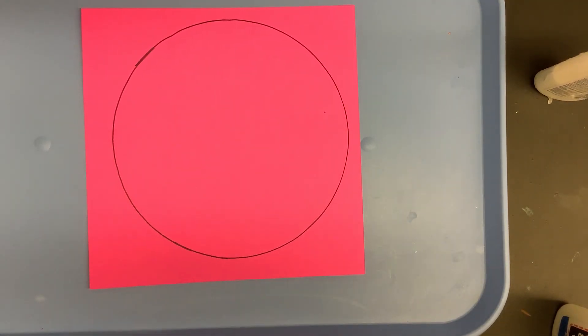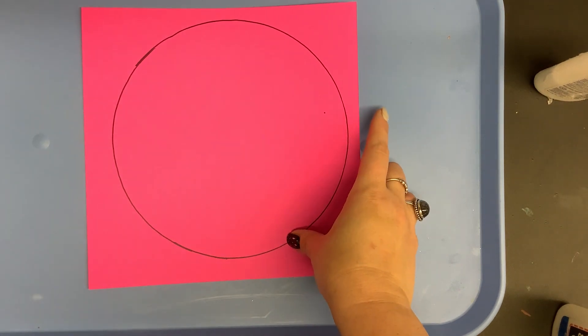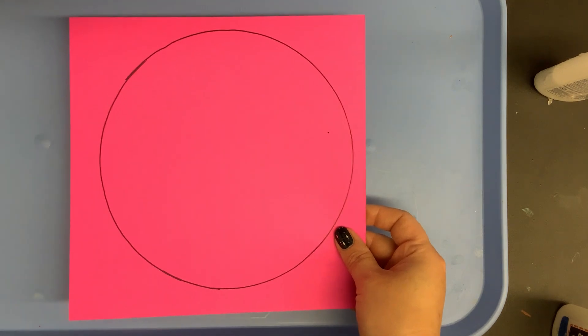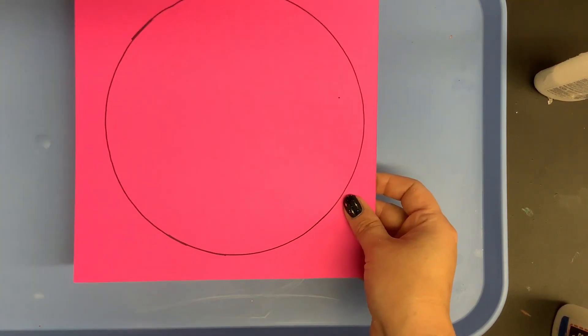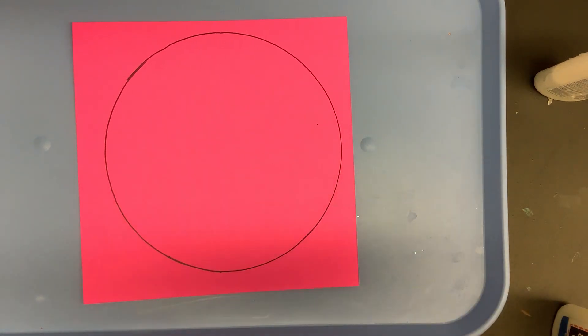This year Dot Day is the same day as our author visit and the author that's coming to visit us, Chris Barton, he has a book called Glow, which is also our school-wide theme this year, Geckos Grow to Glow. So I picked out some cool neon paper for our Dot Day projects, but his new book is all about glitter. So we're combining glow and glitter for our dots this year just because he's gonna be here on Dot Day.